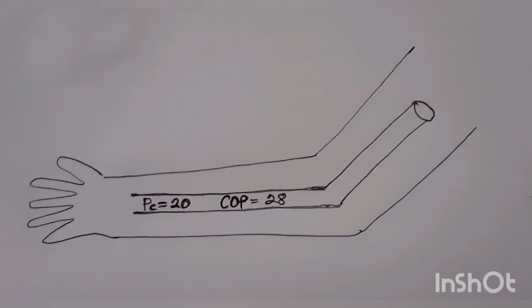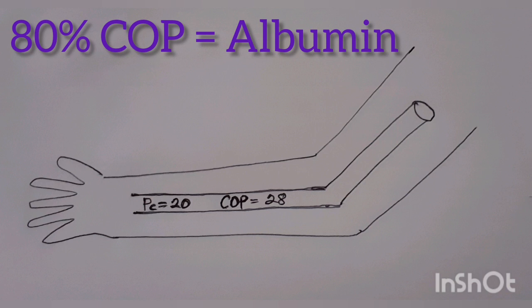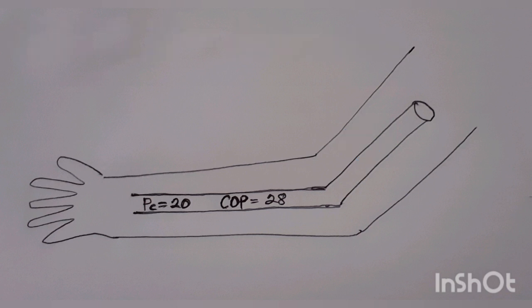About 80% of plasma COP is due to the albumin fraction of plasma proteins. So if the plasma albumin concentration is low, the COP will be reduced and fluid will move from the capillaries into the interstitium, causing edema. Edema is therefore a very common finding in persons with hypoalbuminemia.